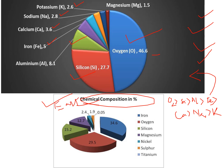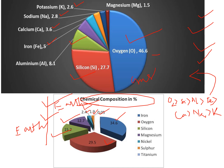Moving on to the chemical composition by percentage of our entire Earth: iron comes first, then oxygen, then silicon, then magnesium, then nickel, then sulfur, then titanium. You should remember this is the chemical composition by percentage of the entire Earth — not just the crust. There is a difference: this sequence is for the entire Earth, while the previous sequence was for the crust.